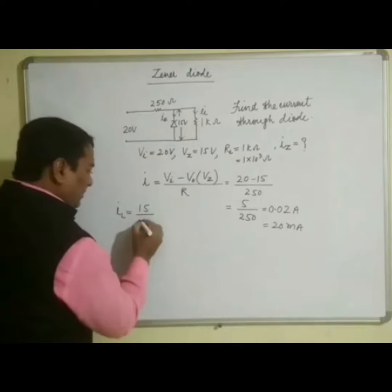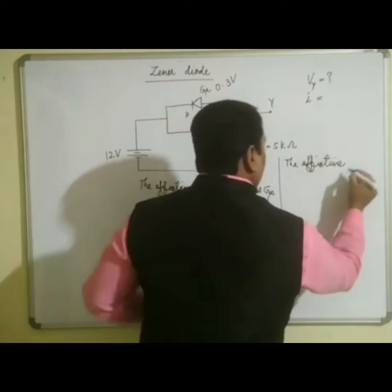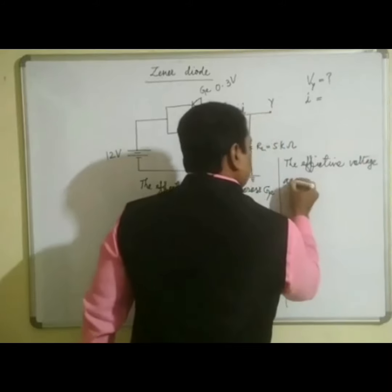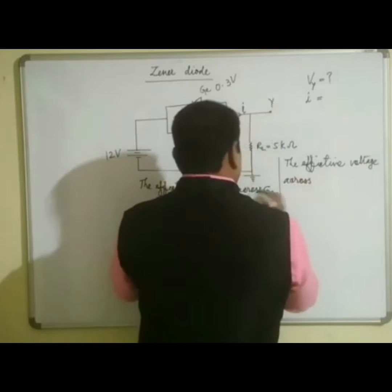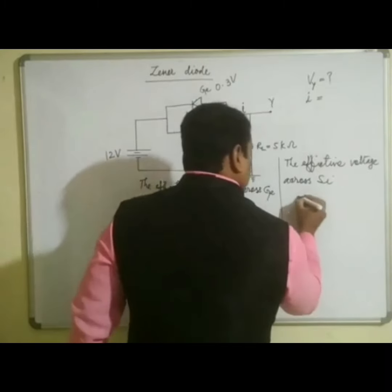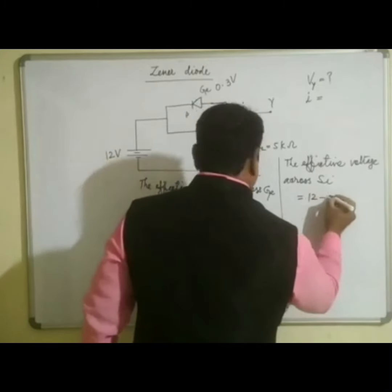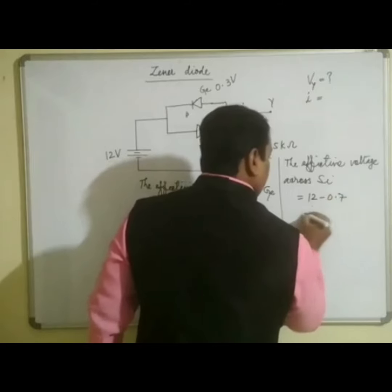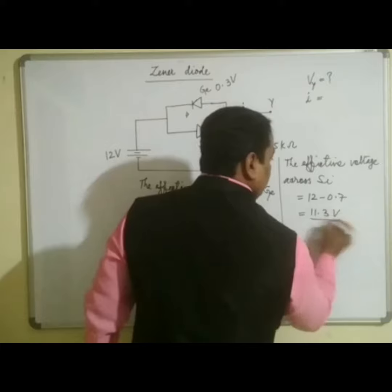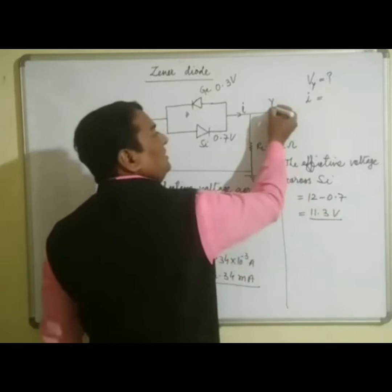I is equal to V by R. And the effective voltage across silicon diode is equal to 12 minus 0.7. And finally we get it as 11.3 volt, which is also the potential at Y.